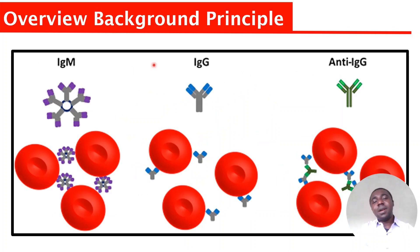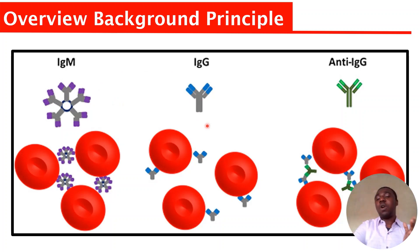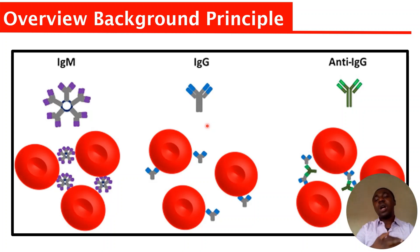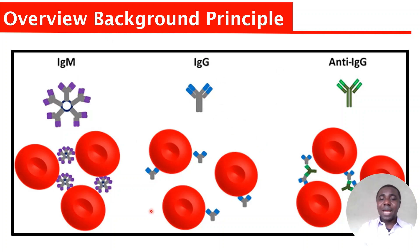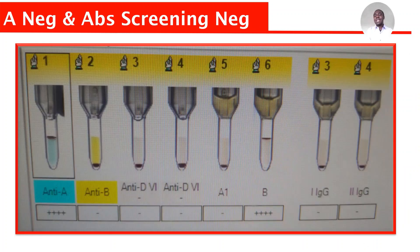IgM is what blood grouping measures. When you talk about forward grouping and reverse grouping, what is being measured is IgM. But when you talk about antibody screening, what is being measured is IgG. Please differentiate that. Whether IgM or IgG, they are found in the plasma, and the antigens are found on the surface of the blood cells or any other cell.